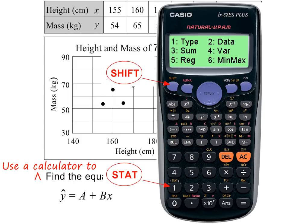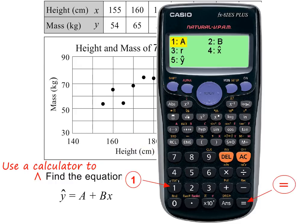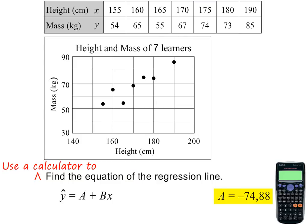Next, you need to press Shift and then Stat, which is also the button for 1. And then you need to press 5 for regression. You should now see the following on the screen. To get the value for A, you need to press 1 and then the equal sign. Correct to two decimal places, the value of A is minus 74.88.